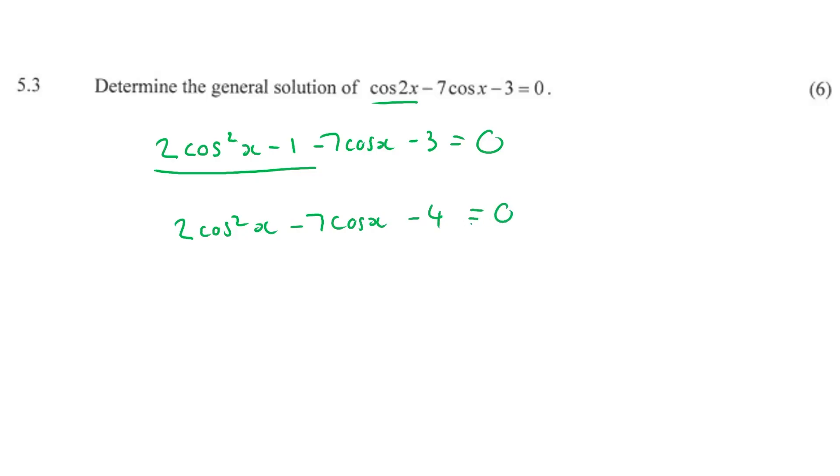We can't really simplify this anymore, so we need to factorize it. If you're battling, just plug this into your calculator. If you've got one of those fancy posh calculators, the silver ones. Alternatively, you can just use the quadratic formula, whereby a equals 2, b equals negative 7, and c equals negative 4.